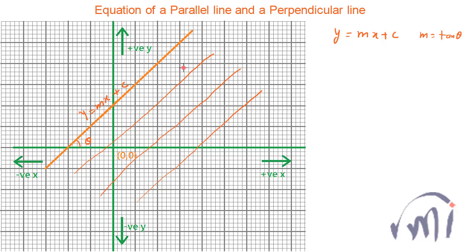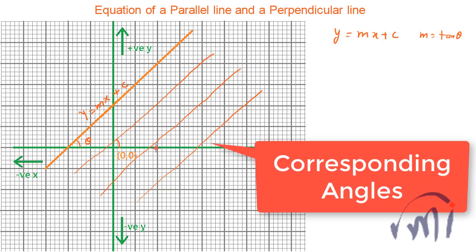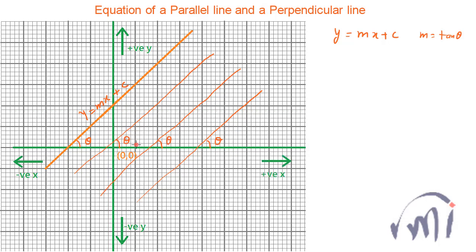If all these lines are parallel, then all these angles — this angle, this angle, and this angle — will all be equal to theta. So if all these angles are equal, then any line which is parallel to our original line will have m = tan theta.